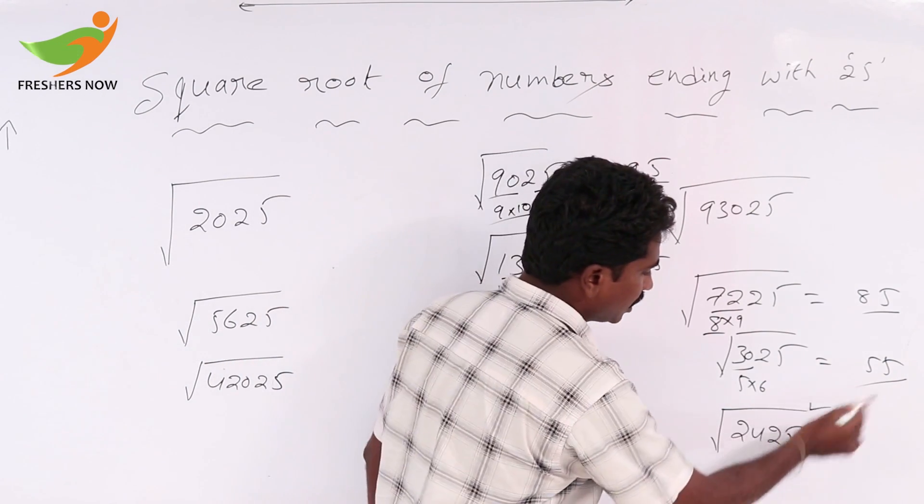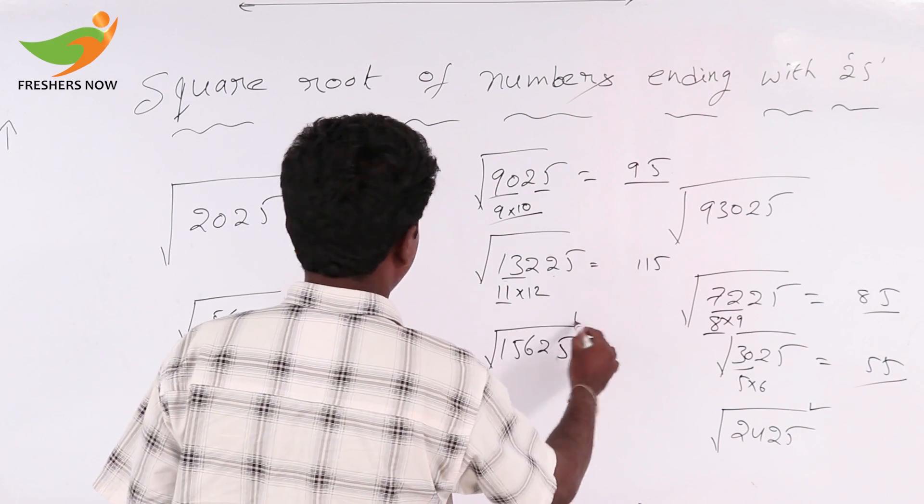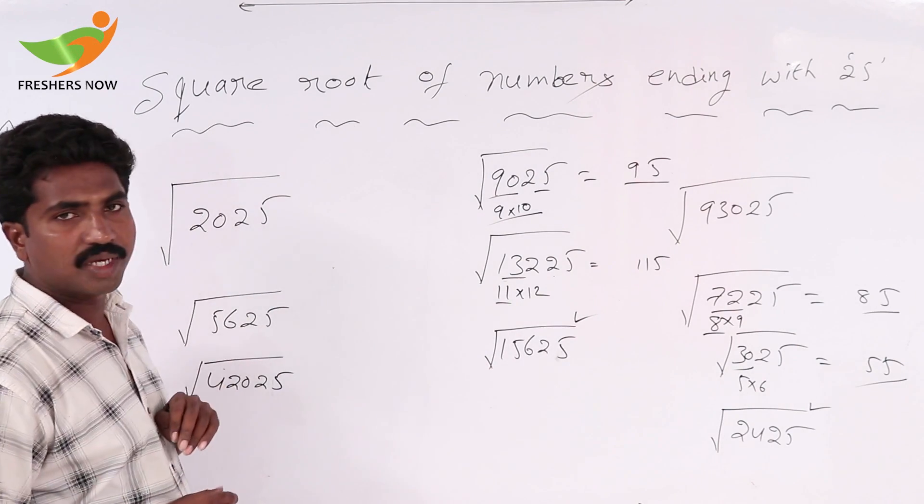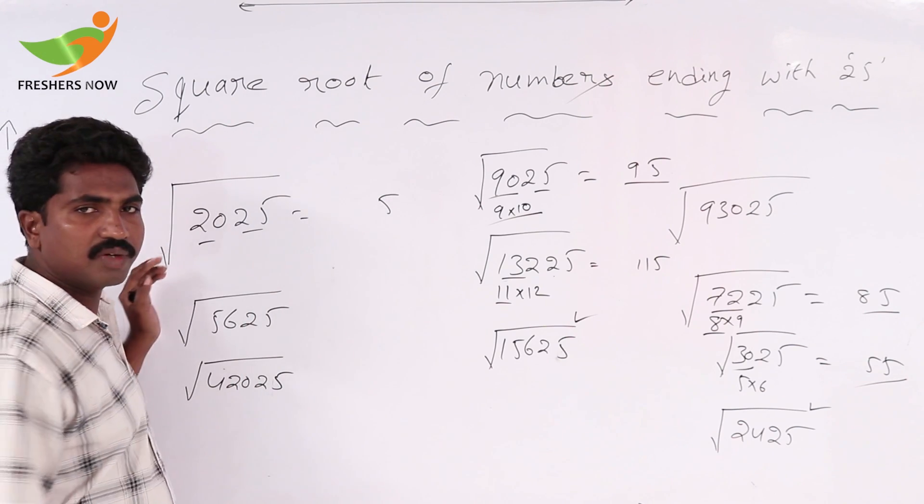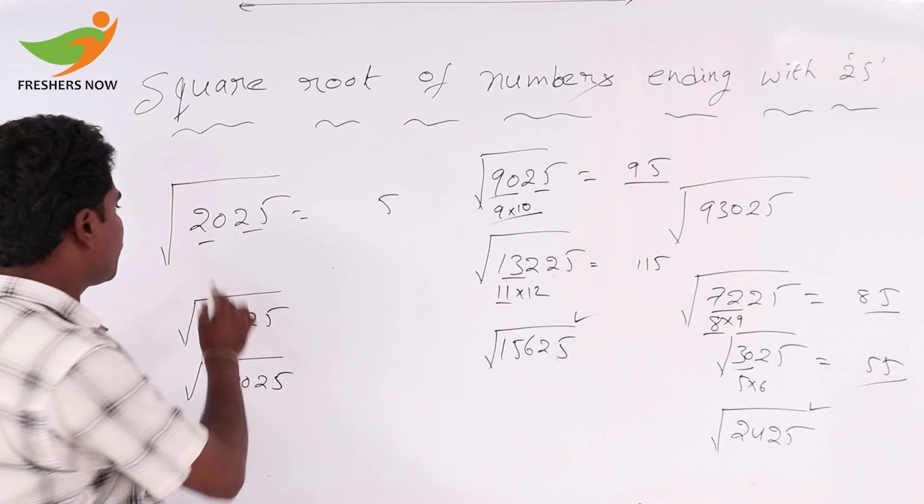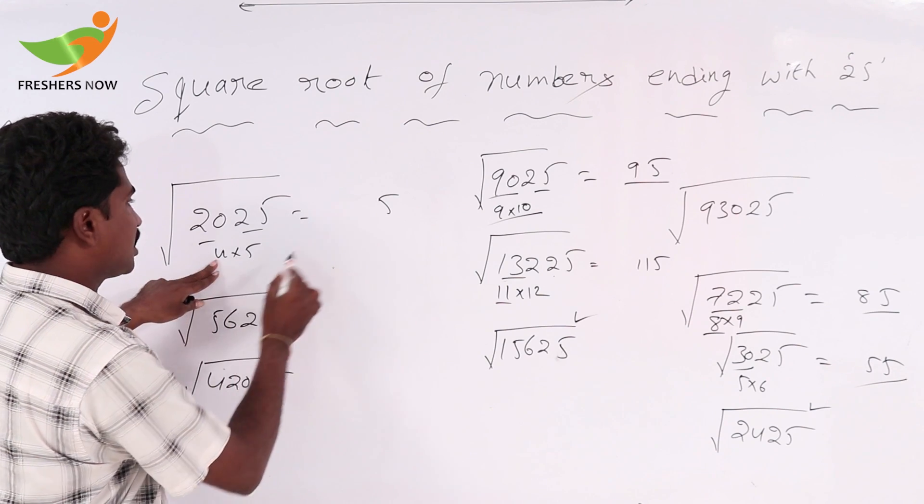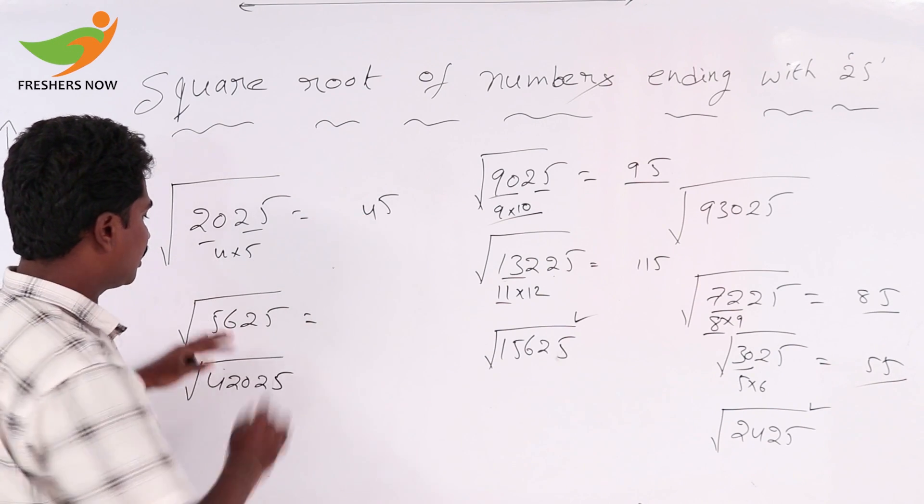Like that, try to solve this value and this value. If you take 2025, square root of 25 is 5. 20, can you write 20 into multiple of two consecutive numbers? 4 x 5. The small number is 4.